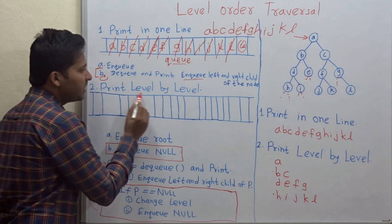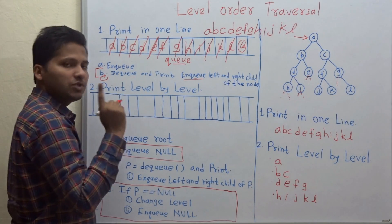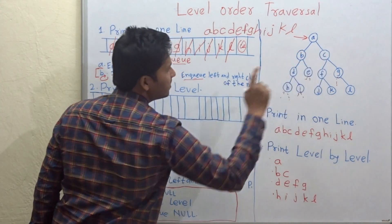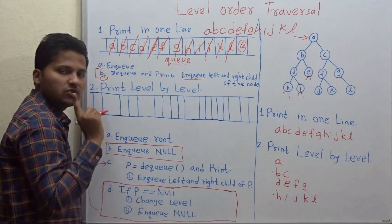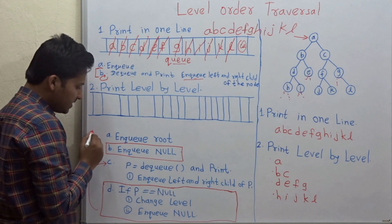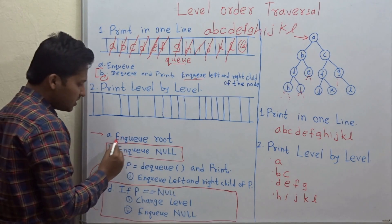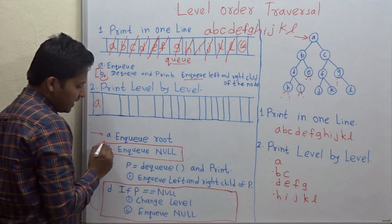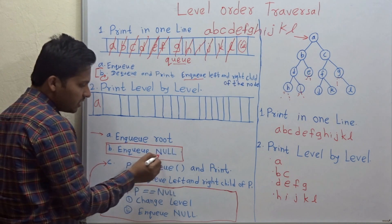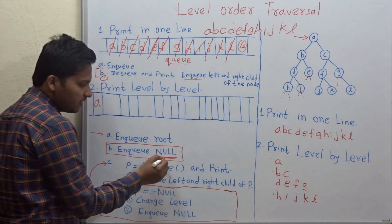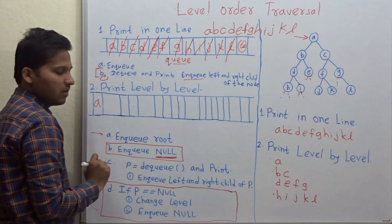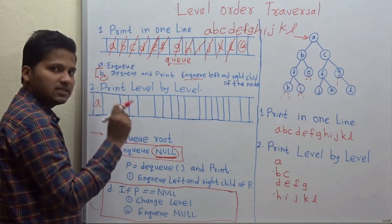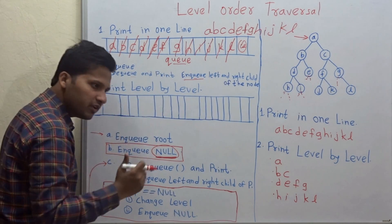Let's go to the second method — printing level by level. The fundamental question is: how to identify levels? How to identify that A is in the first level, B and C in the second level, D, E, F, G in the third level? Whenever a level is over, we insert null. Whenever a null is encountered, it means a level is over and we are going to the next level.